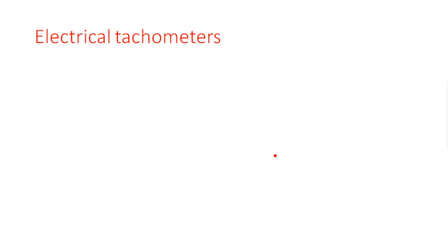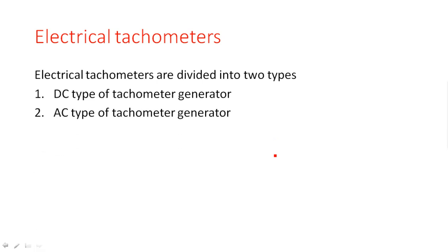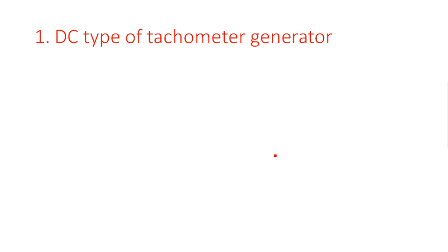Coming to the second type of tachometers used to measure angular velocity — electrical tachometers. Electrical tachometers are again classified into two types: DC type tachometers and AC type tachometers.